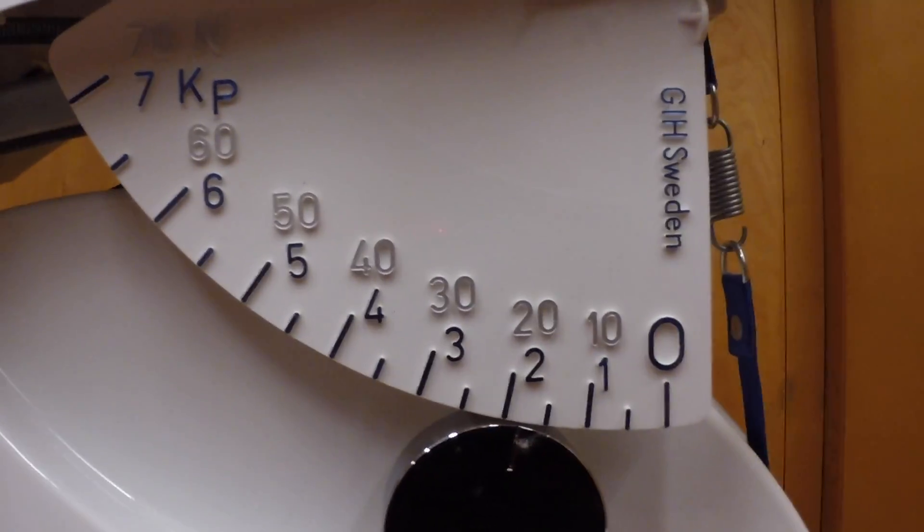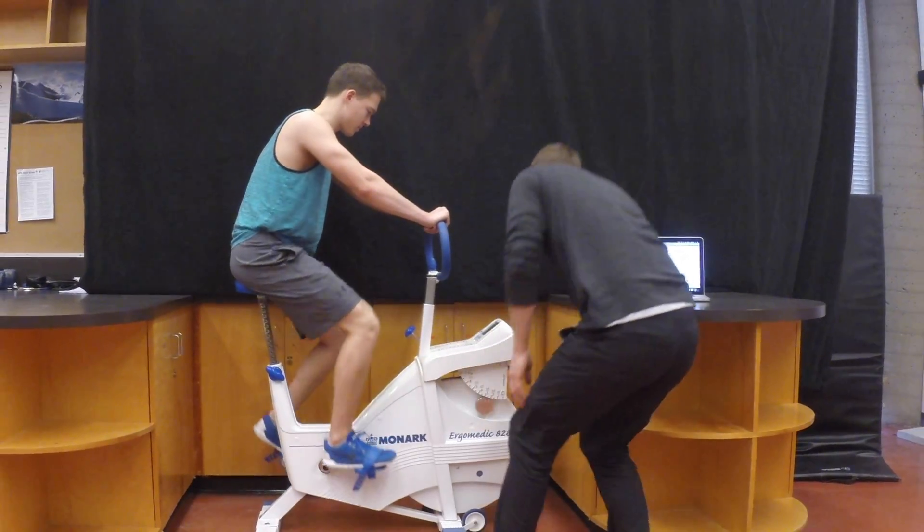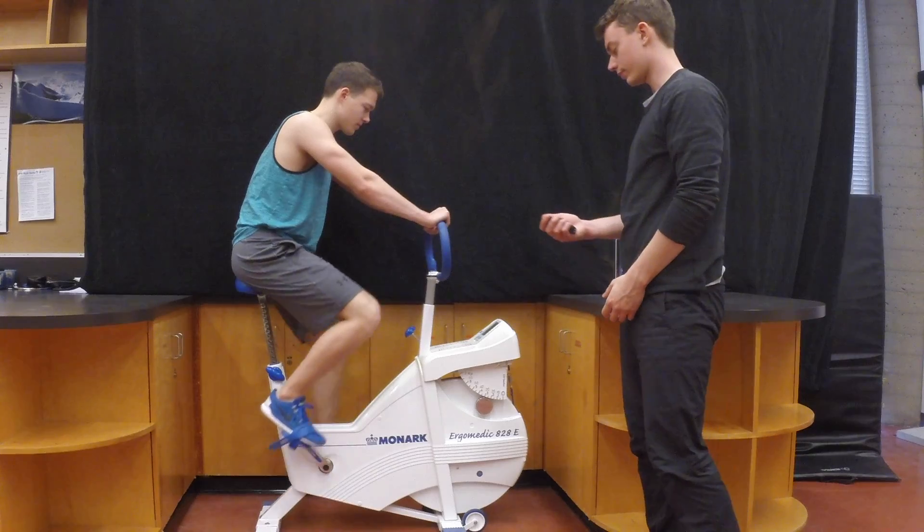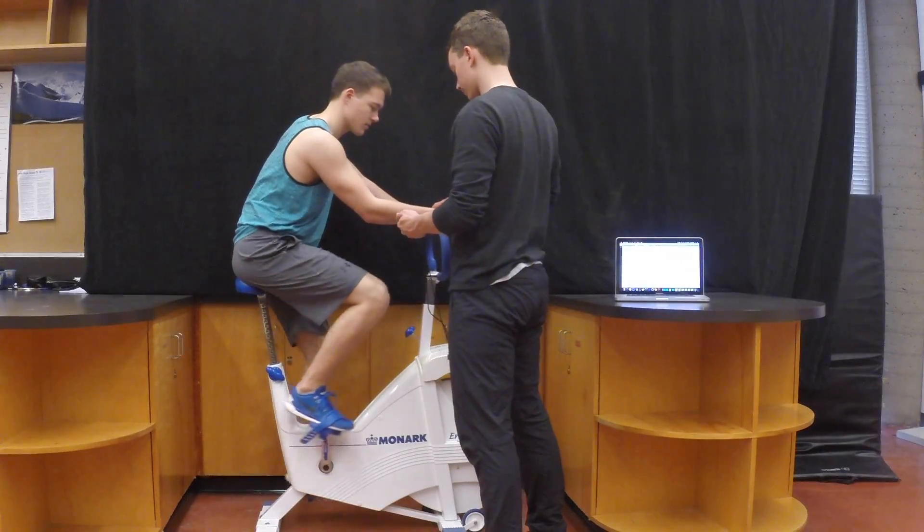So, increase the workload to 2 kiloponds, restart the stopwatch, and have them pedal for another 3 minutes. This time, only take their heart rate in the last 15 seconds of minute 2, and minute 3.